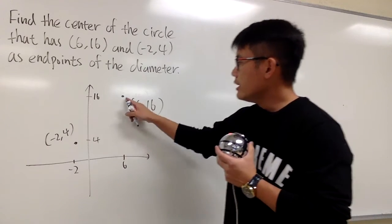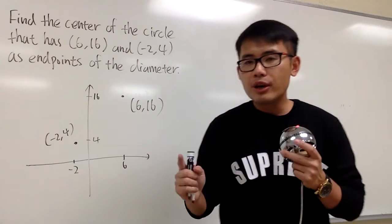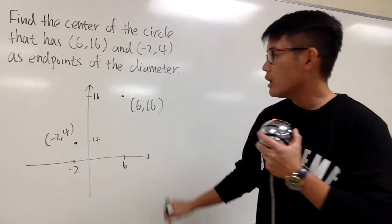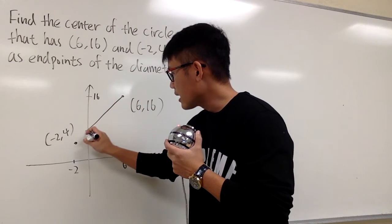Well, these two points are the endpoints of its diameter. And diameter, it's a line that goes across the circle, right? And you pass through the center as well. So, let me just draw you guys, let's connect the dots first.